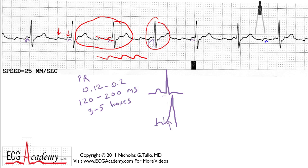When thinking about flutter waves, we're seeing one, we're seeing two, then there's one buried in the beginning of the T wave, and there's one buried at the end of the T wave. So you have to consider this four flutter waves for every QRS complex, and it just keeps repeating over and over again. You could call this atrial flutter with four-to-one conduction.